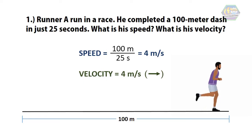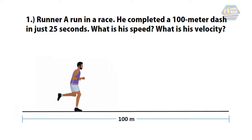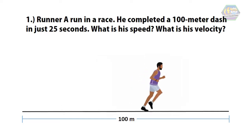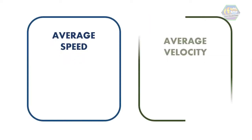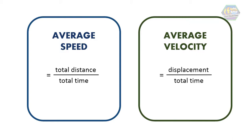This means Runner A covers four meters every second from the starting point to the finish line. But in reality, a runner might run fast at the start, slow down, then speed up again. To address this, we introduce average speed and average velocity. Average speed is total distance traveled divided by total time, whereas average velocity is displacement divided by total time.